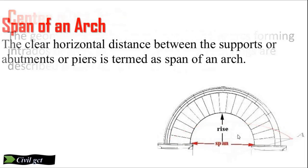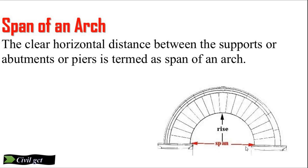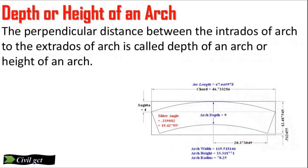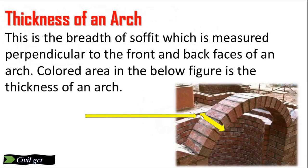Span of an arch: the clear horizontal distance between the supports, abutments, or pier is termed the span of an arch. Rise of an arch: the clear vertical distance between the highest point on the intrados and the springing line is called the rise. Depth or height of an arch: the perpendicular distance between the intrados and the extrados of an arch is called the depth or height of an arch.